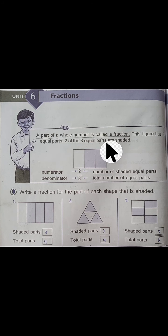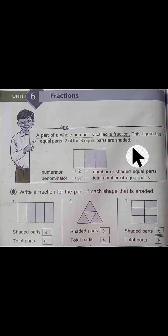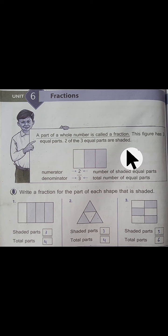A part of a whole number is called a fraction. In other words, if we divide a whole number into some equal parts and we take few of these parts, then the relationship between the few parts and the total parts is called a fraction. A fraction has two parts: numerator and denominator.